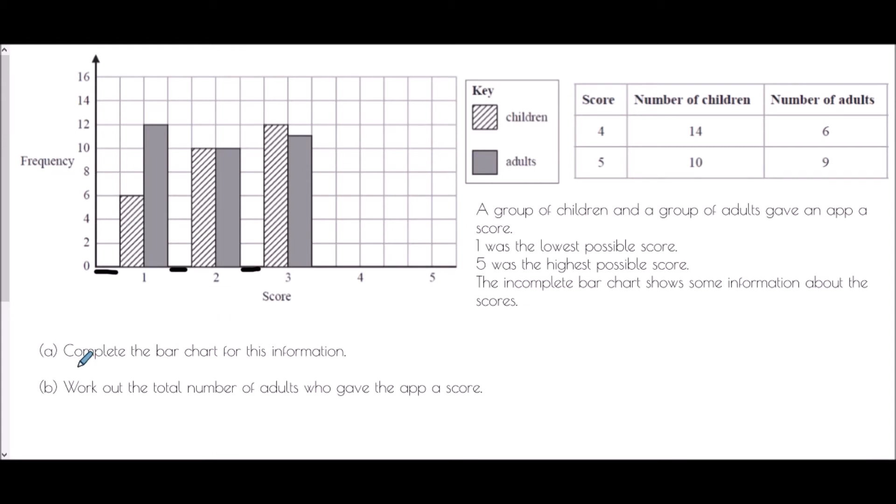And what we've been asked to do here is complete the bar chart for the information. So just straight away we're told that for a score of four there were 14 children and therefore I need to leave a gap but then draw a bar which will go up to the height of 14 and draw across and then draw down. Now in order to show that this is children I'm going to have to do the cross hatch just to show which group we are talking about. And then for the number of adults well the number of adults was six so all I need to do is go to six and draw a line going across and draw a line going down and this time color that in in full to show that that was the adults.